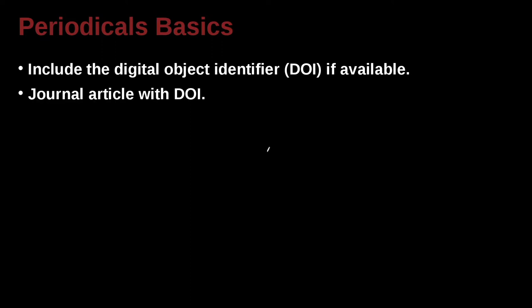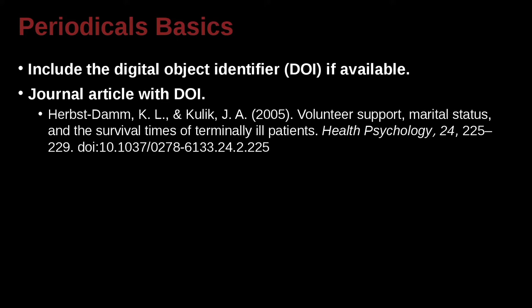If you have the document object identifier, you can go ahead and use that. Here's an example. We have the author's last name, comma, first name, period, middle name, period, comma, ampersand, second author, last name, first name, middle name. Look at the spacing there very carefully. Then we have parentheses, the year of the publication, period again.